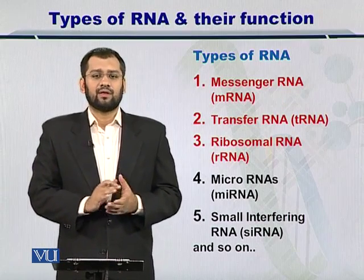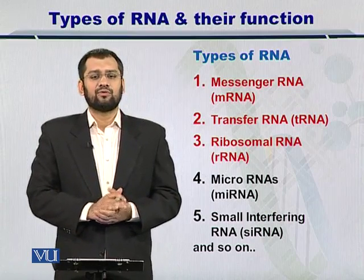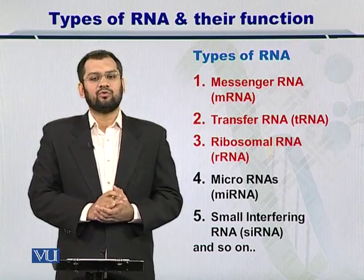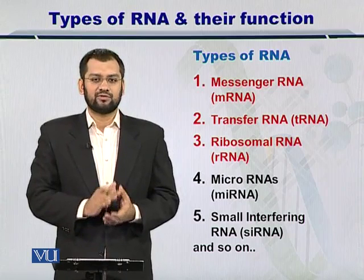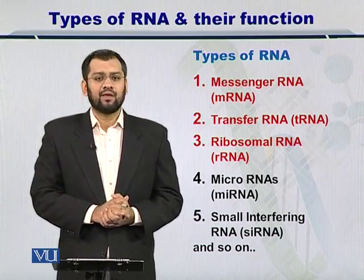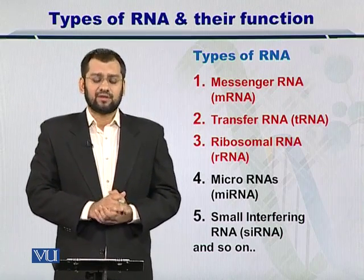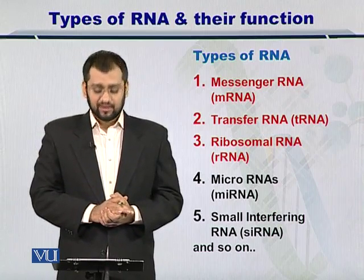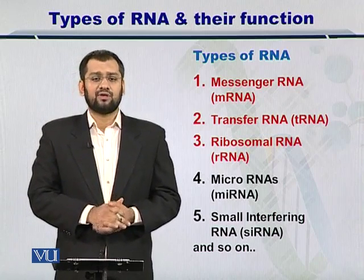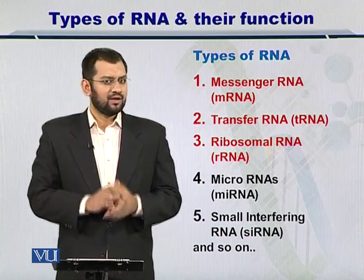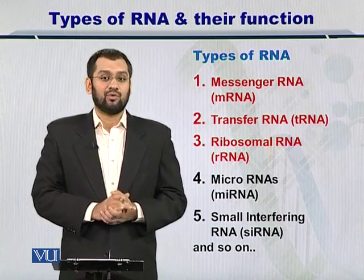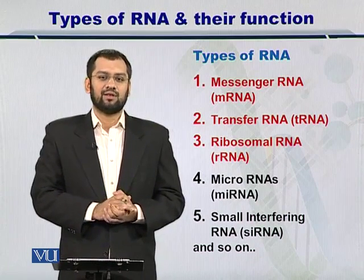Broadly speaking, there are five to six types of RNAs that fall into the categories of coding and non-coding RNAs. The most important one, which we will also focus on today, is the messenger RNA or mRNA. Besides mRNA, there are other types such as transfer RNA (tRNA), ribosomal RNA (rRNA), micro RNAs, and small interfering RNAs. Don't be misled by the name 'small' for small interfering RNAs, as they also have very important roles within biological systems.